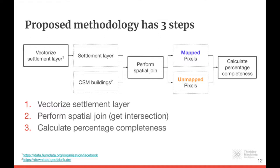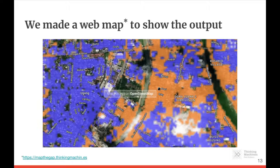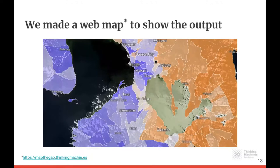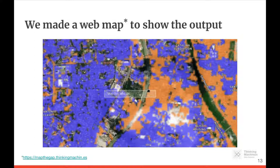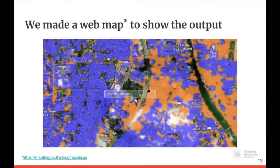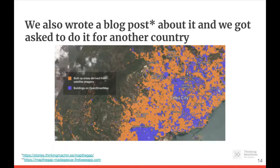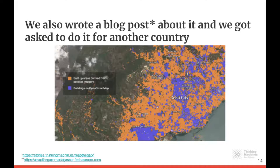The main assumption behind the method is that the settlement layers can be used as a proxy ground truth, giving the location of built-up areas and essentially the location of the population. We made a web map to show the output for the Philippines — orange means unmapped and blue means mapped. One feature is a button that links you directly to OpenStreetMap if you want to contribute. You can access it at mapthegap.thinkingmachines. We also wrote a blog post to share our work, and the Mapbox community team reached out and asked us to do it for Madagascar as well.